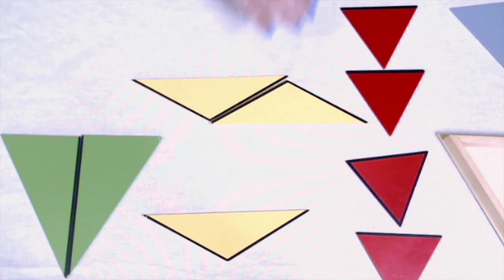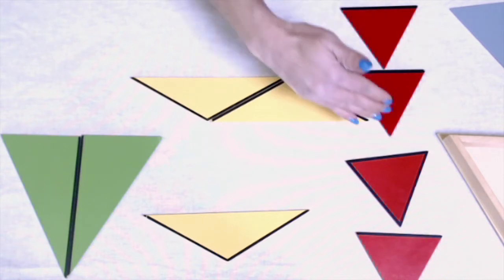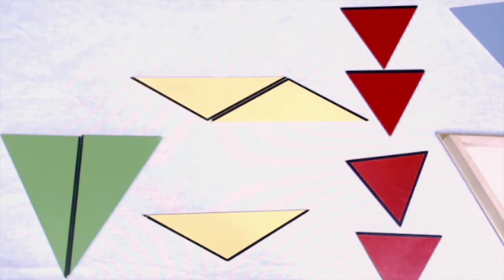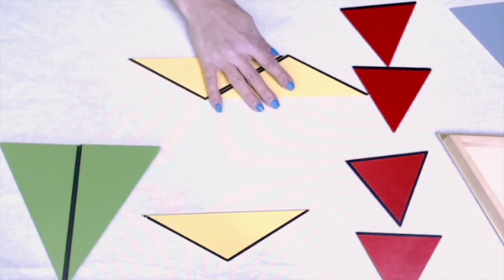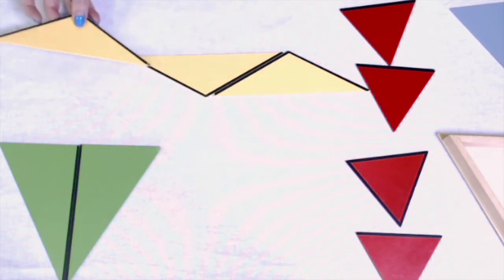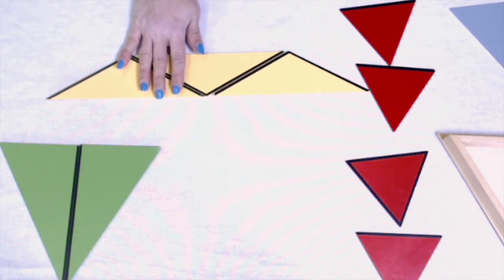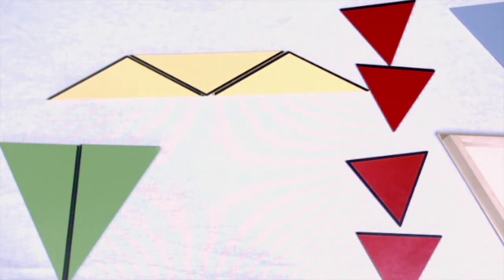I made a parallelogram — or a rhombus. It's a parallelogram because they're paralleling each other. I made a trapezoid, but I did not make a triangle. My black lines are on the outside.